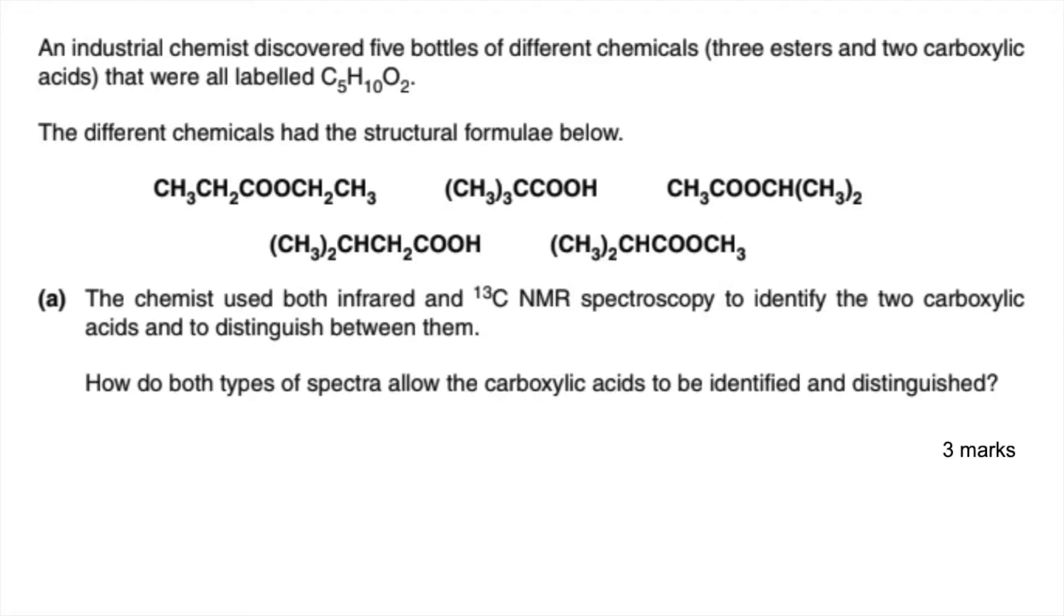So the first thing we'll do is identify the two carboxylic acids. We'll see those two in green there. We've got to use infrared and carbon-13 to identify them and then distinguish between them. So infrared's going to help us identify them because only the carboxylic acids will show a broad absorption between that range due to the OH bond. The esters don't have the OH bond, so they won't show that absorption. To distinguish between them, we're going to use carbon-13.